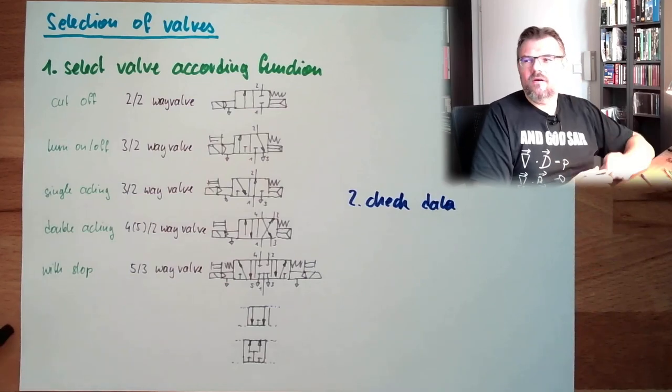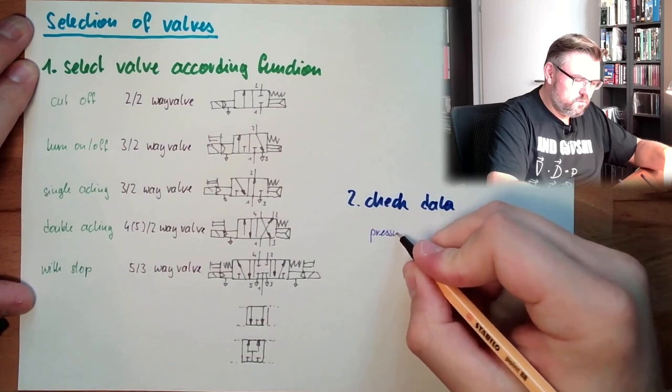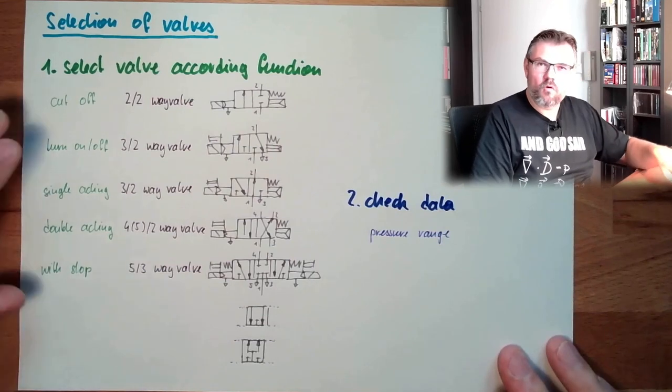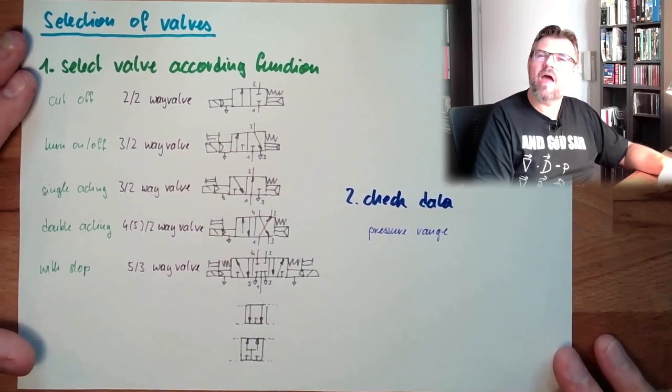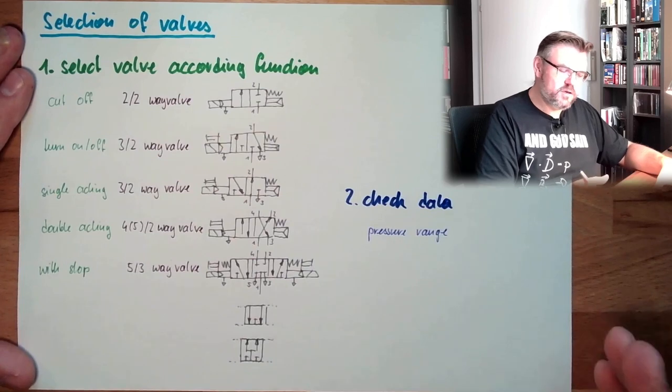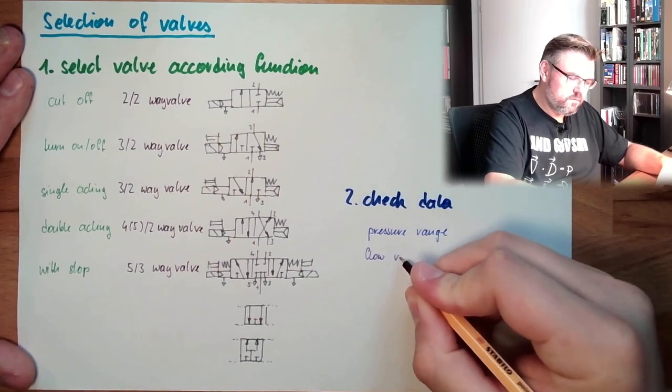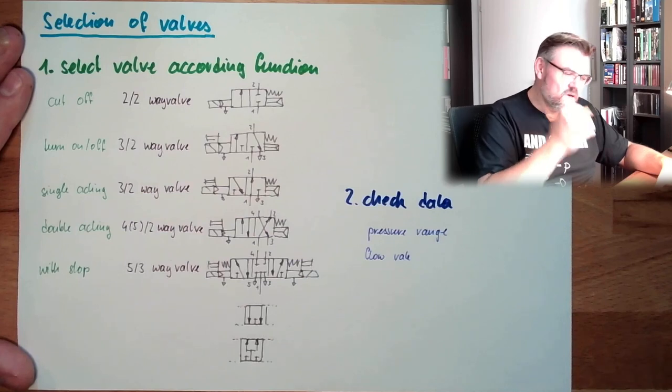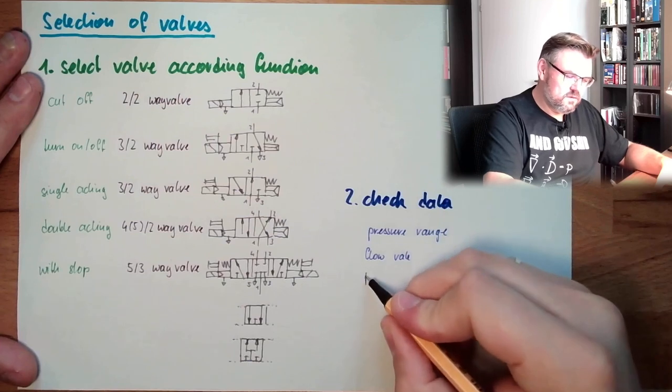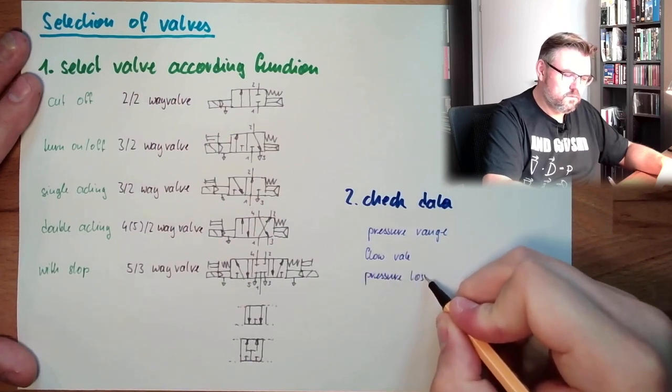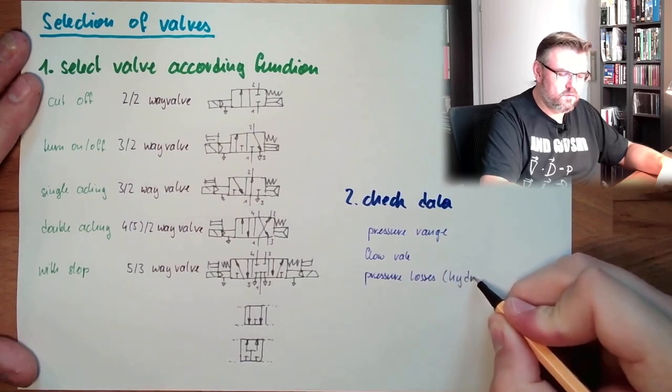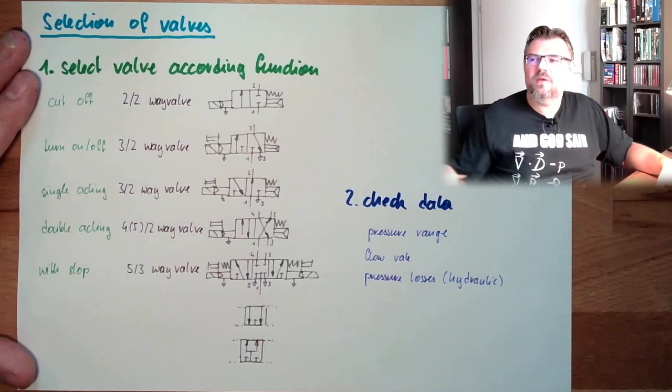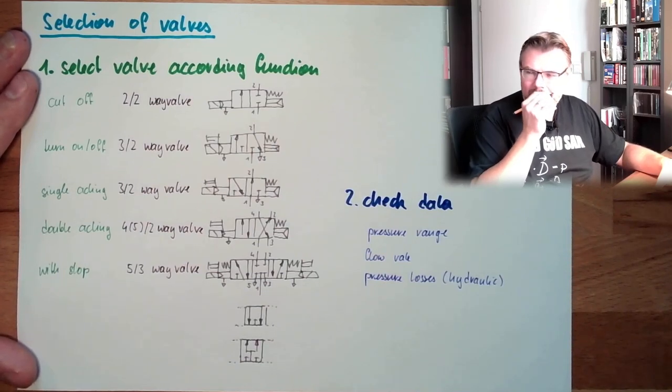So we do have things like pressure. Pressure range needs to fit the pressure, especially in hydraulic valves. If you have extraordinary high pressures, then you might run into troubles there. Pressure range needs to fit. Then the flow rate. Flow rate, how many liters per second can pass there? And in hydraulic valves also the pressure losses. This is mainly on the hydraulic side. These are things which need to be considered, switching times.